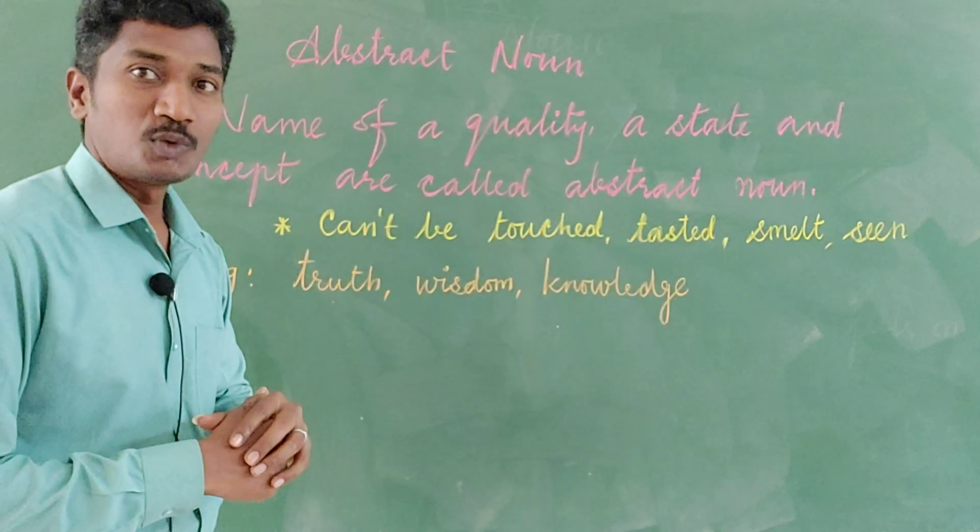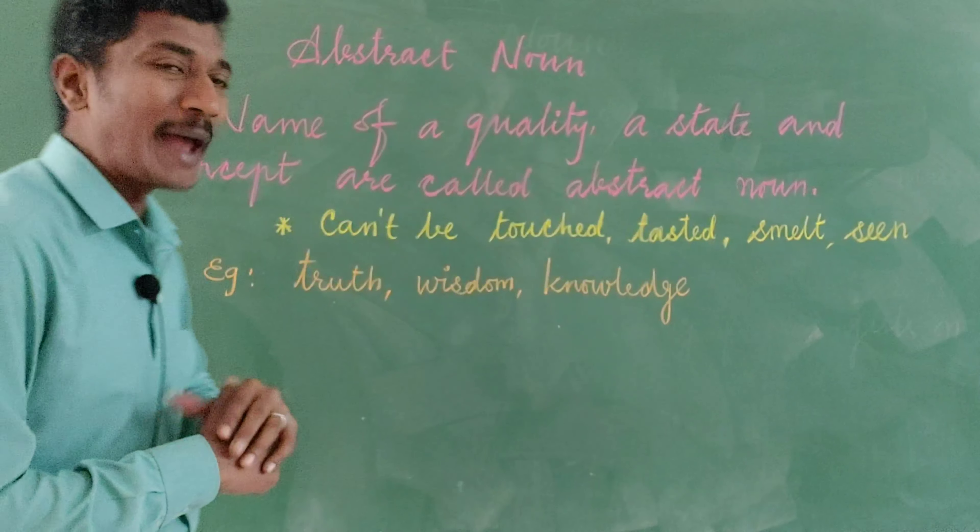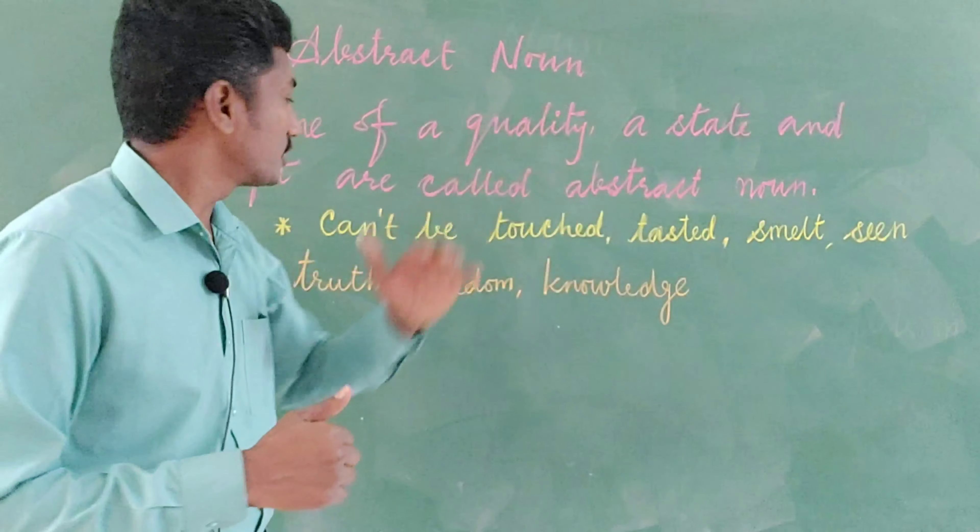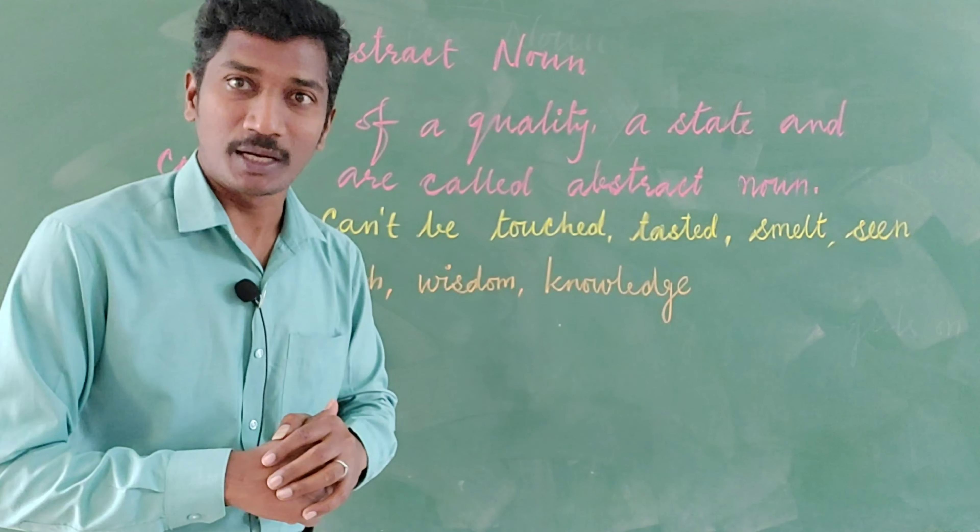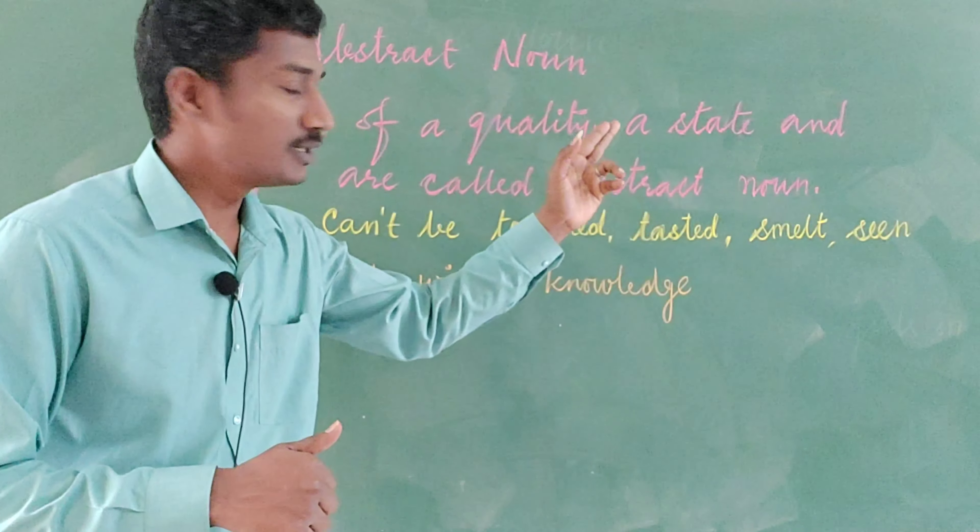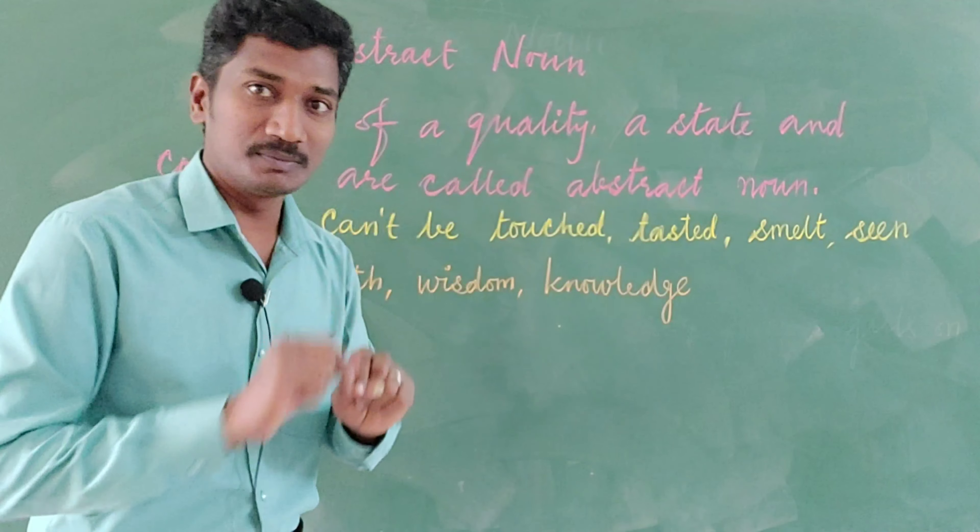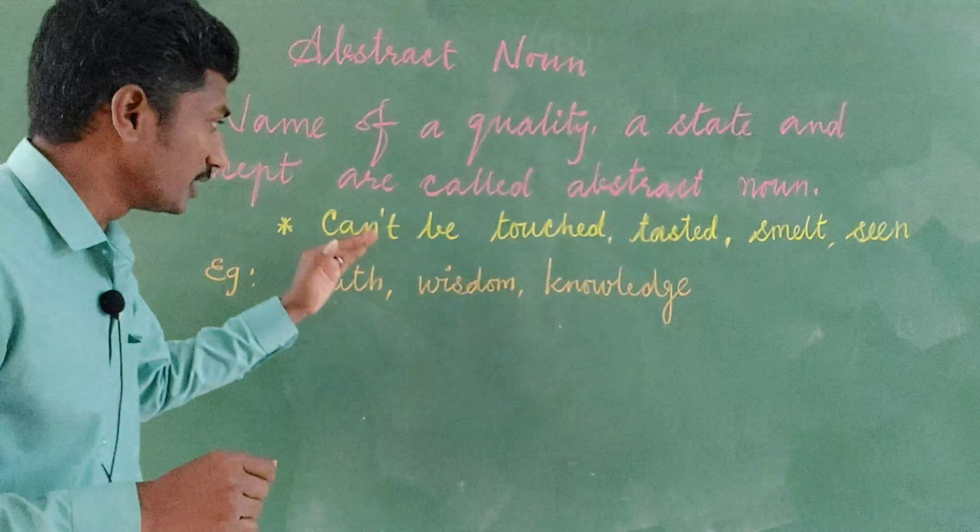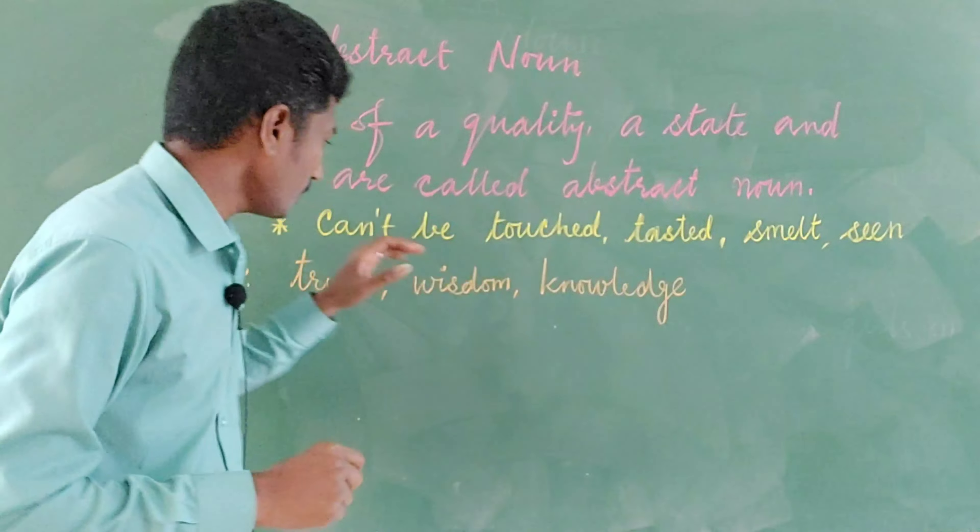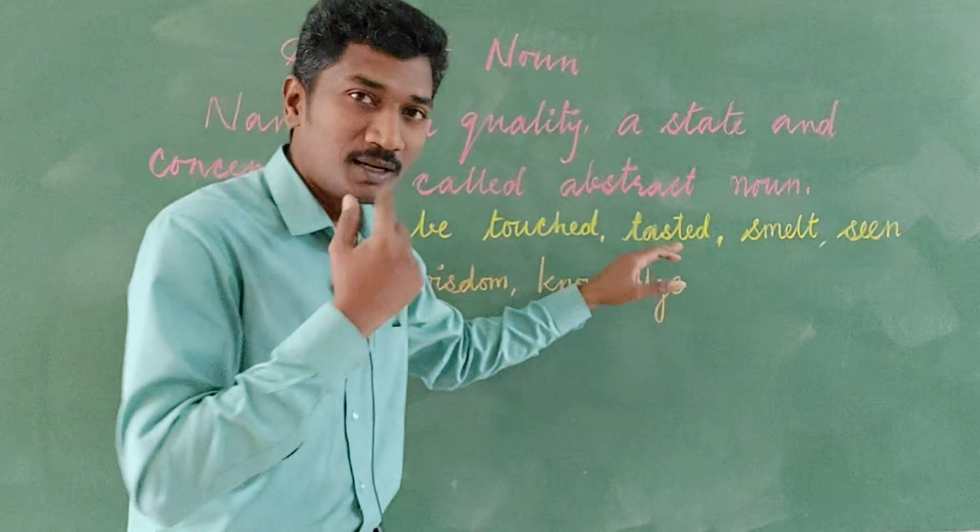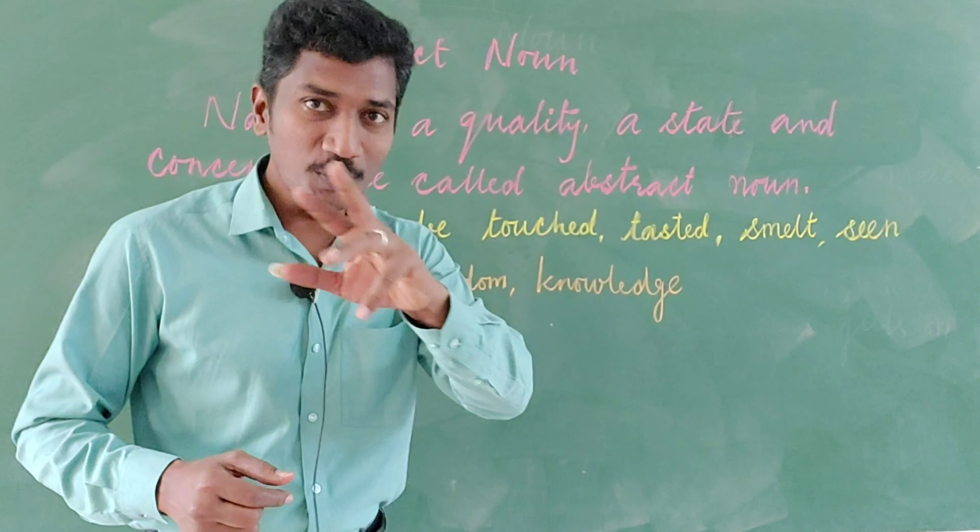Abstract noun: name of a quality, a state, and concept are called abstract noun. Quality, state, and concept - these all cannot be touched. That is what I have simplified here: cannot be touched with our senses, cannot be touched, tasted, smelt, or seen. These all cannot be done.